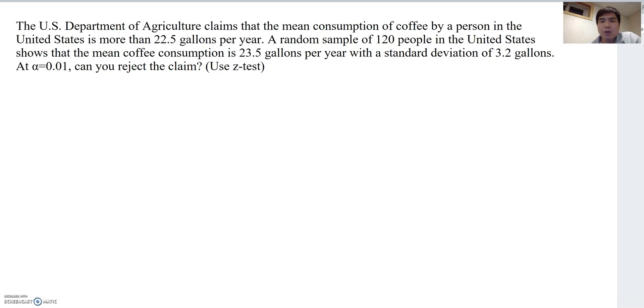A random sample of 120 people in the U.S. shows that the mean coffee consumption is 23.5 gallons per year with a standard deviation of 3.2 gallons. At alpha 0.01, can you reject the claim? Use the Z-test.